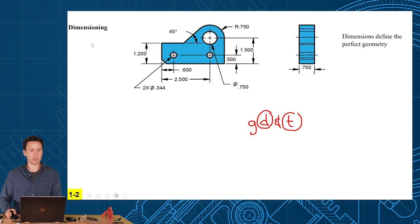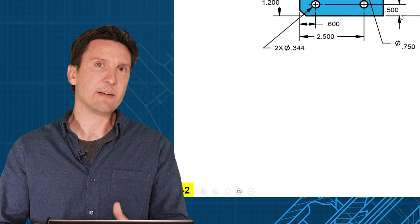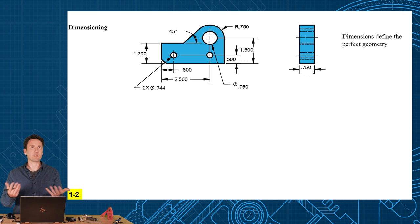So let's start with Dimensioning. I've defined the perfect geometry of this product. How high do you want this ledge? 1.2 inches. What angle do you want? 45 degrees. What's your radius? 750. Diameter? 750. We locate the hole in the x direction, 600, in the y direction, 500. Now, if I only gave these dimensions, would you be able to make this part?